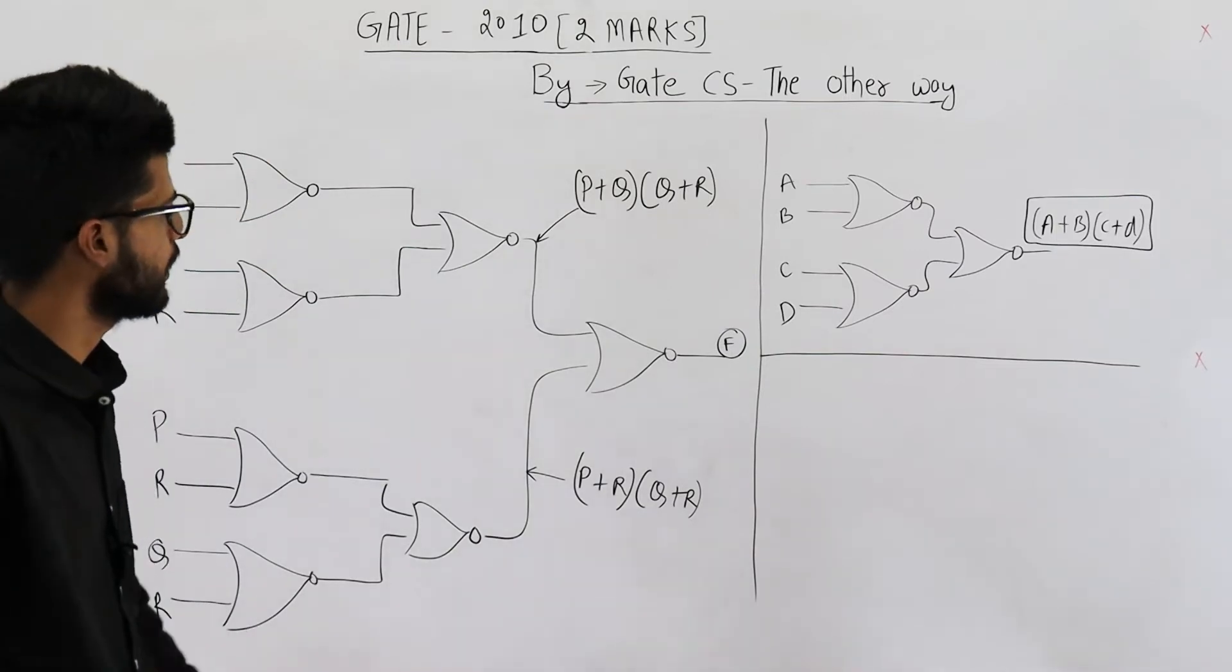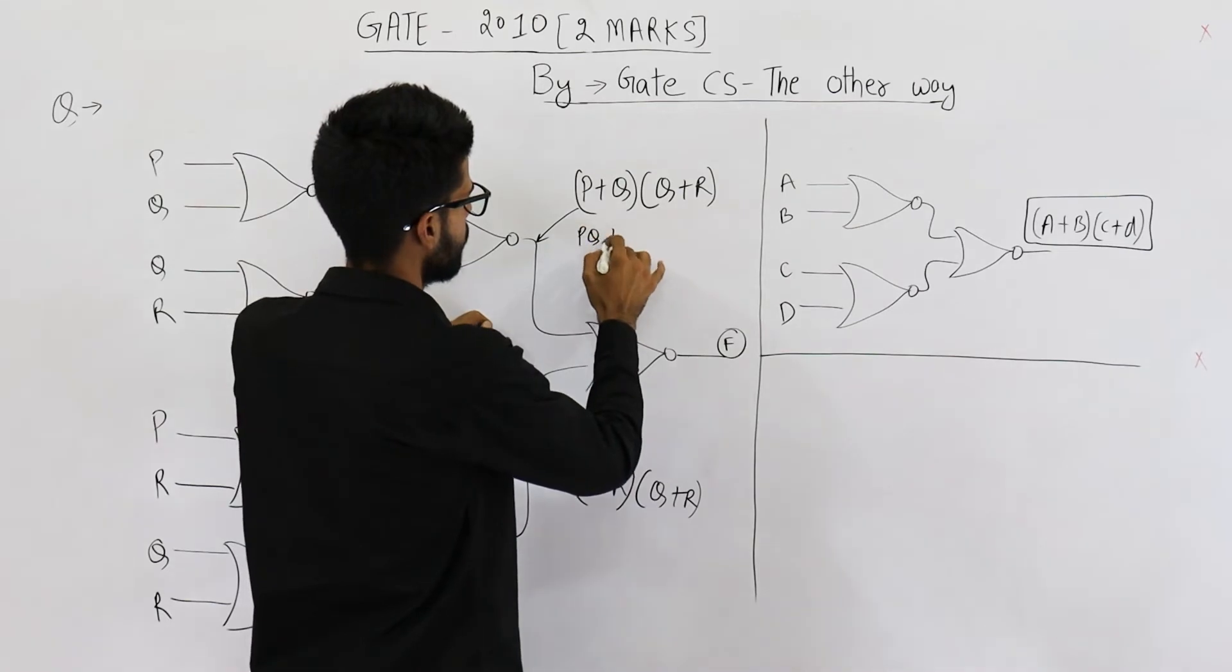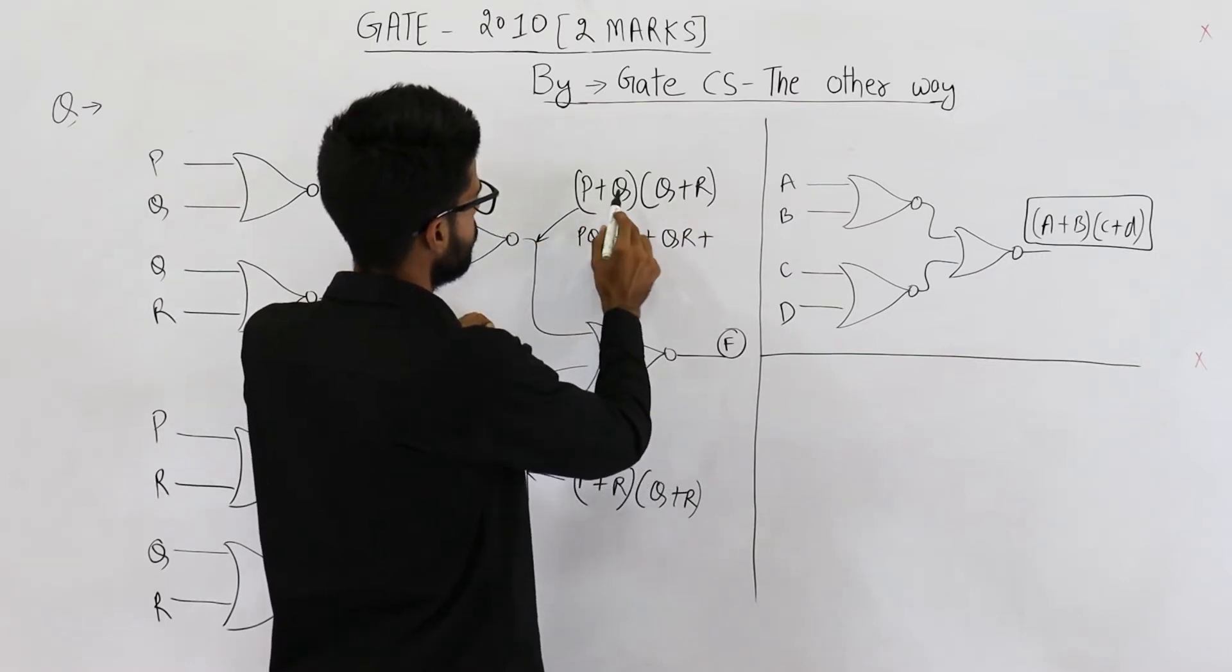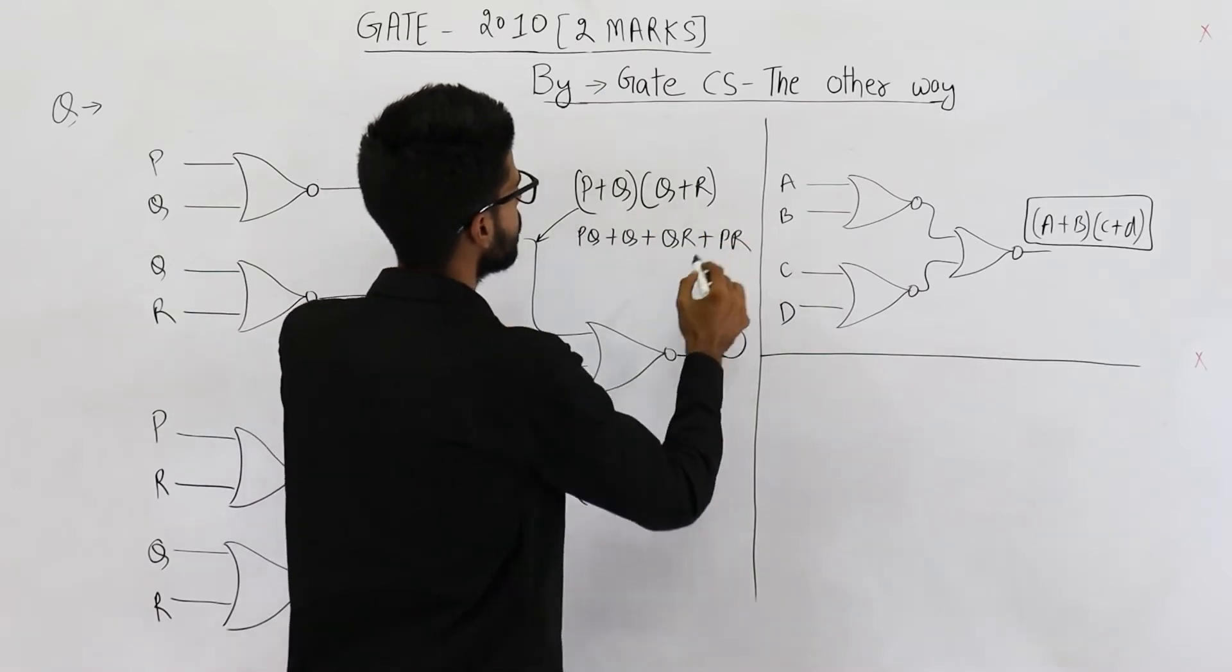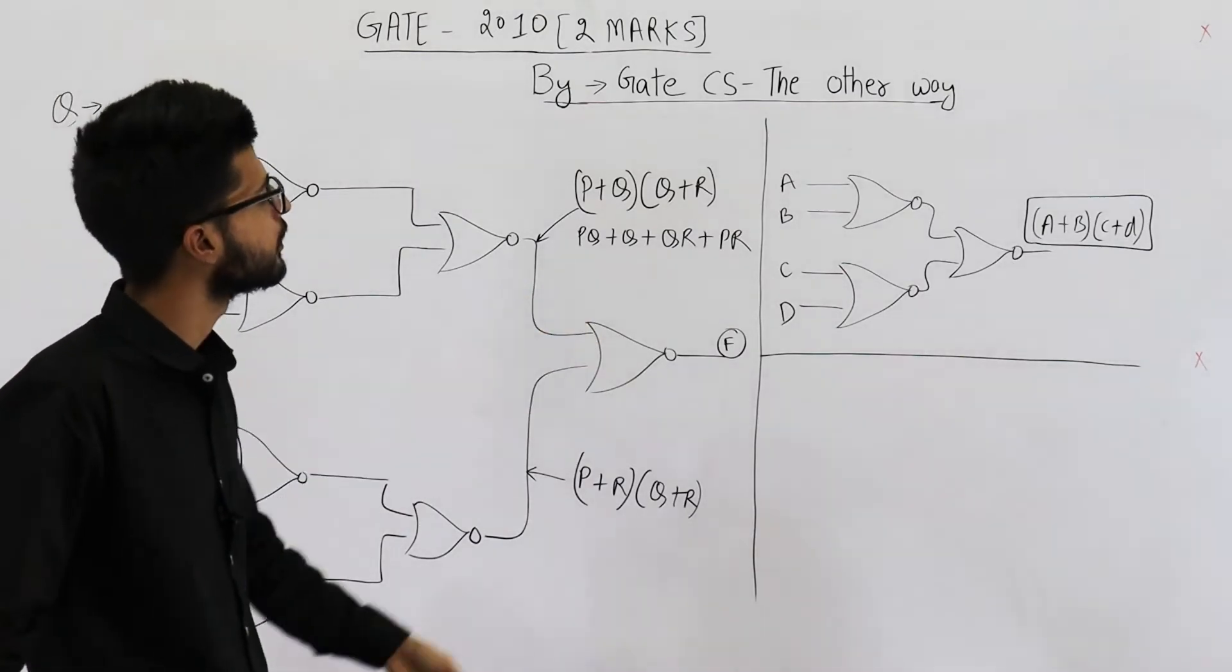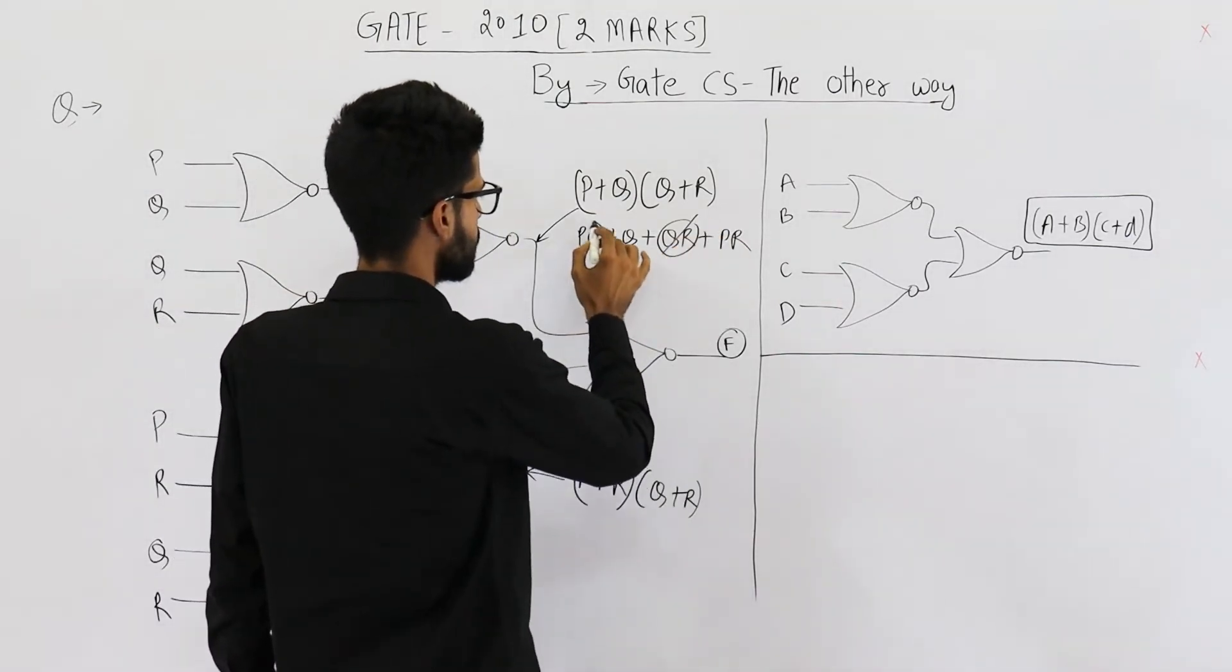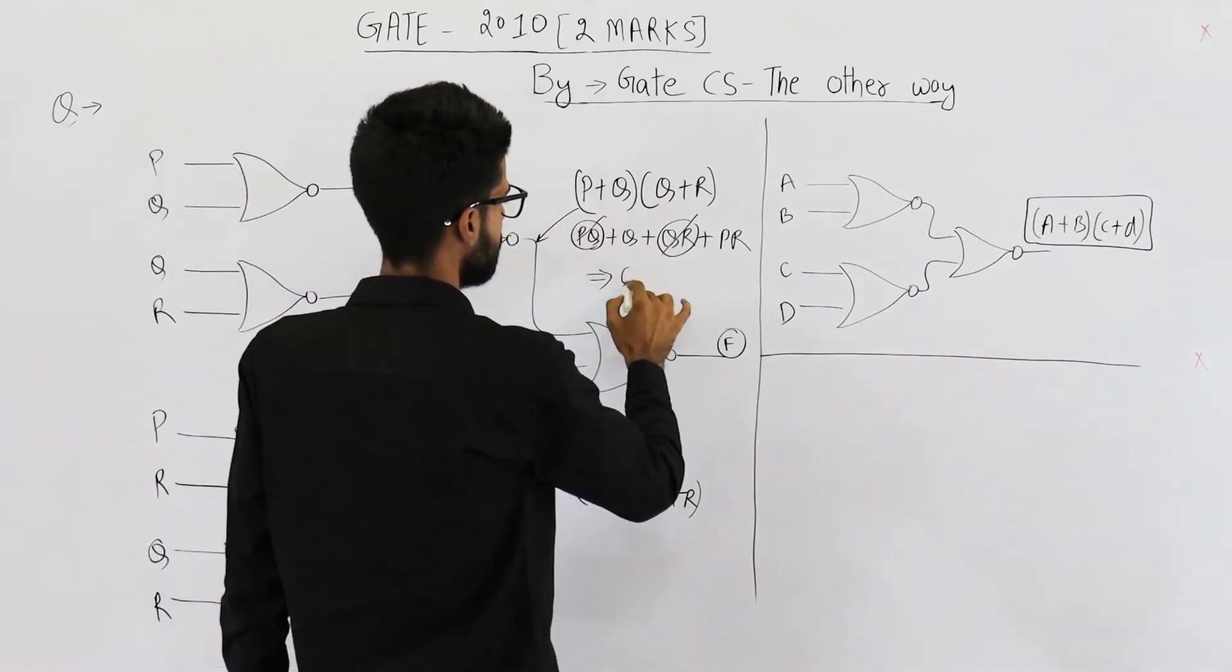Let's just simplify this. It will be PQ plus PR plus QR plus PR plus QR. So this is the output that you get. Now you can see here absorption law is applicable. So this term is redundant as well as this term is redundant. So the overall output of this structure is Q plus PR.